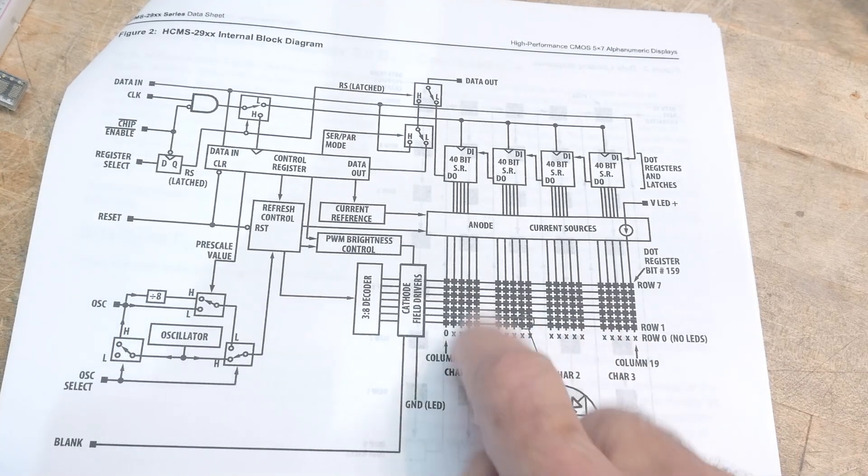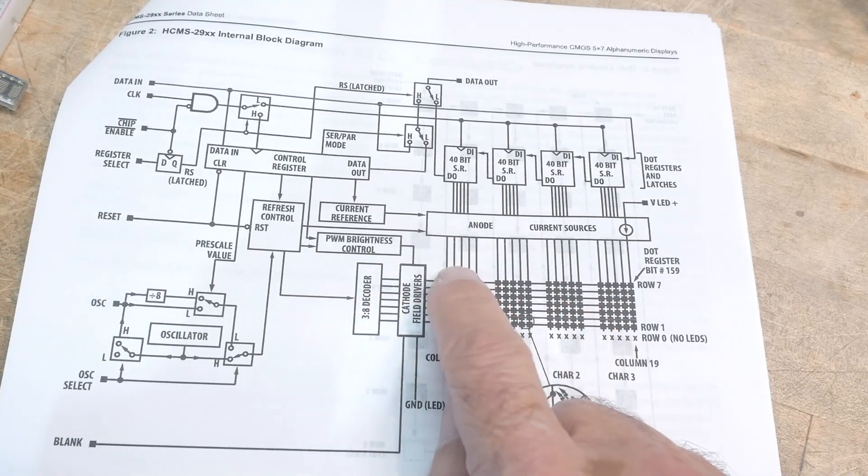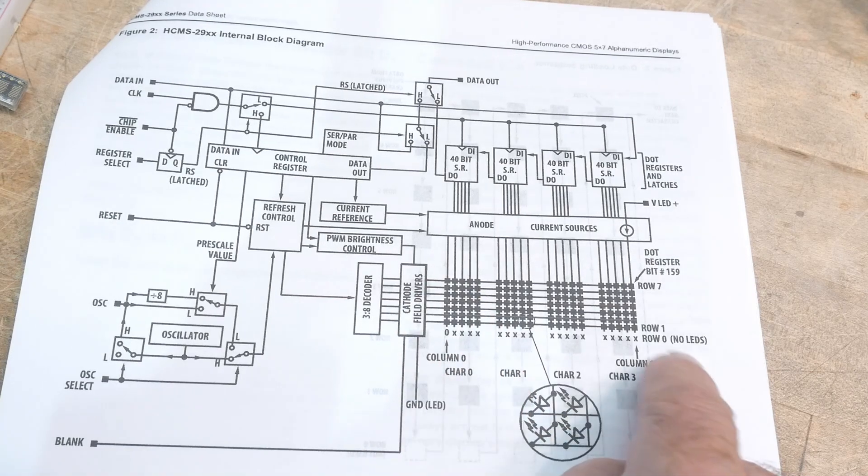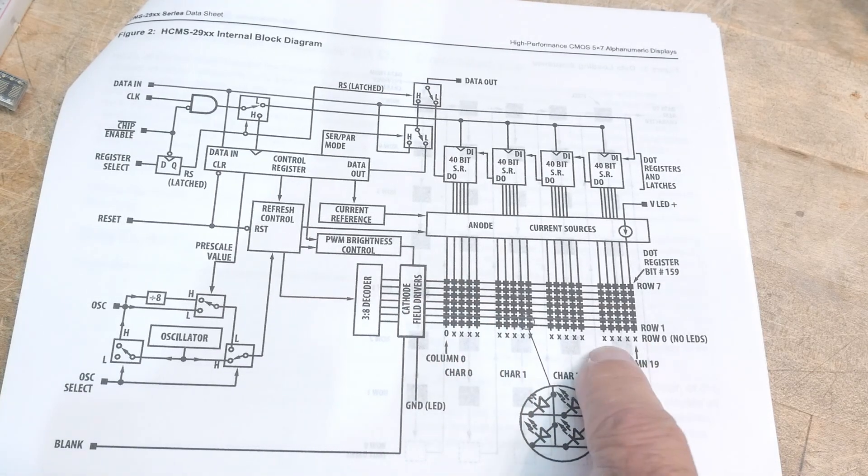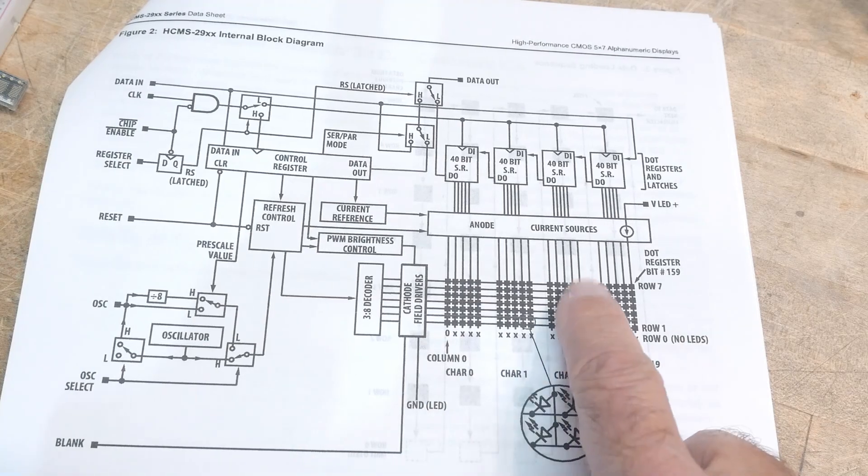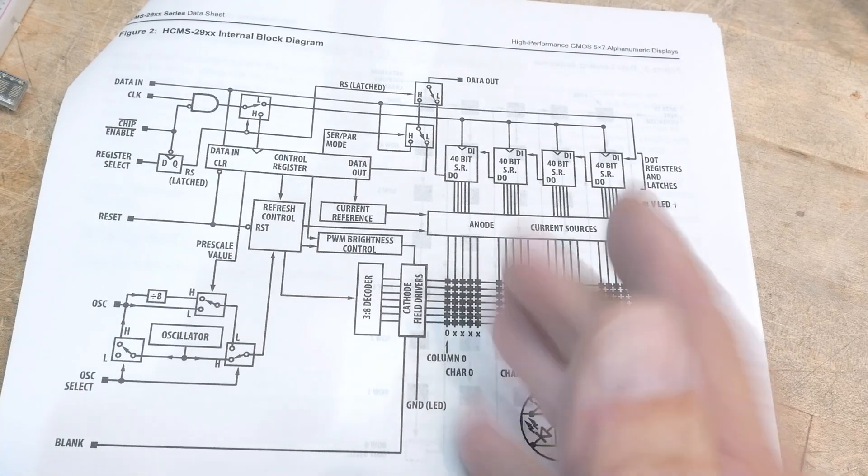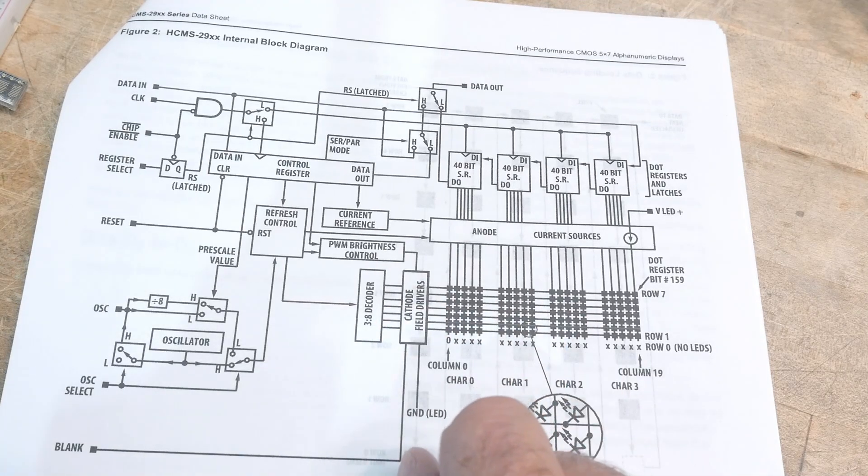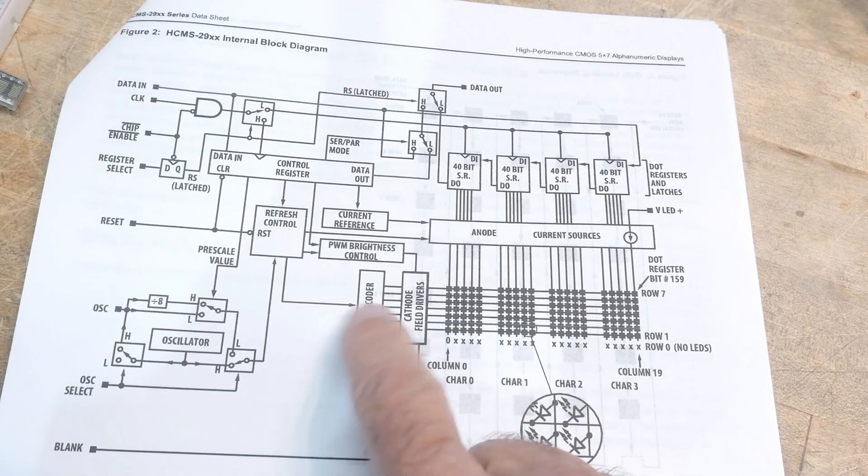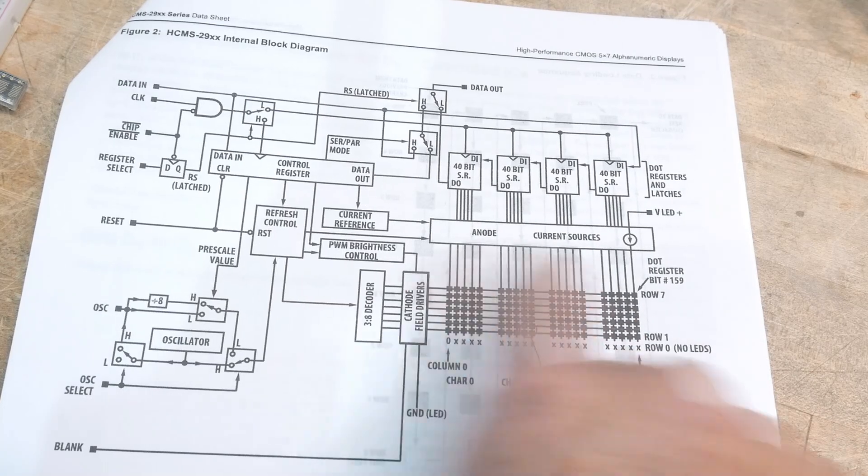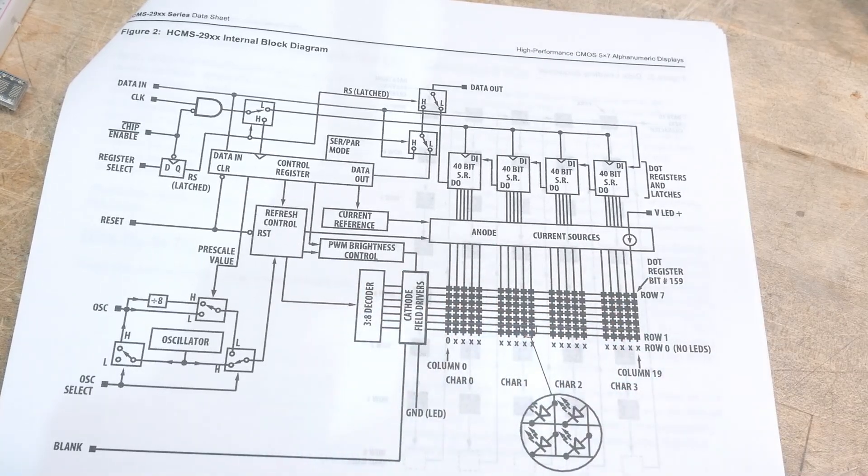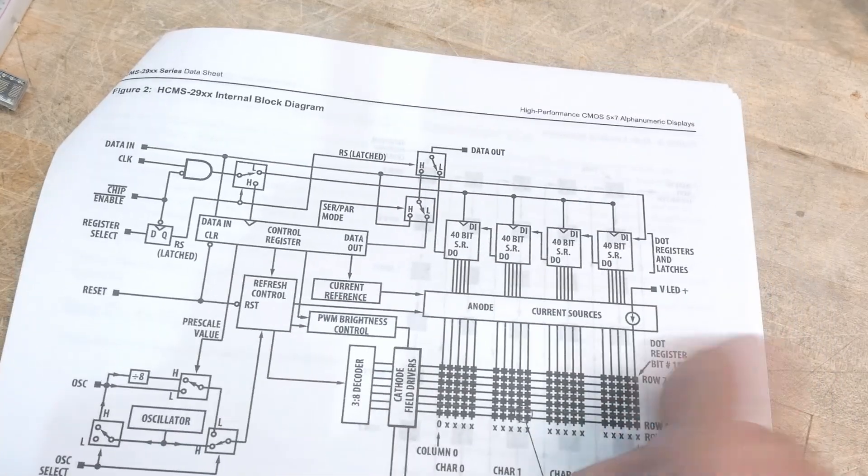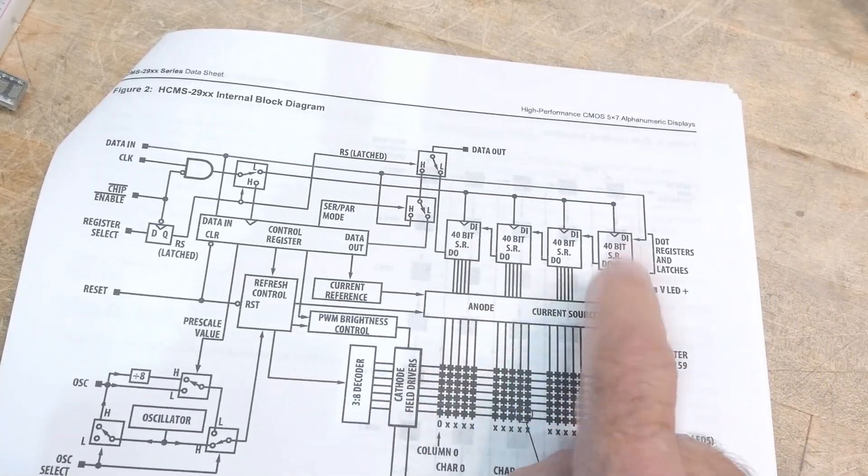There's the matrices over here. All right, so they're organized in eight-bit columns, although row zero has no LEDs in it. And so you can write eight bits at a time in the columns, but only seven are going to show up because it's five by seven. And then there's the three of eight decoder. It scans the thing, refreshes it, internal oscillator or external oscillator. You've got some current sources for the LEDs.